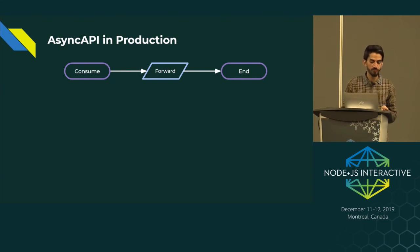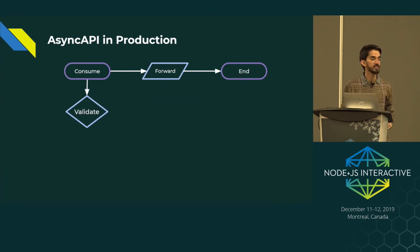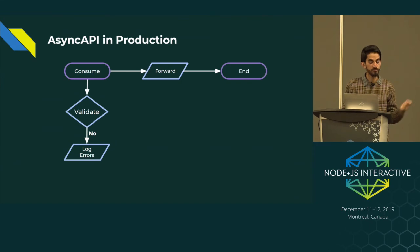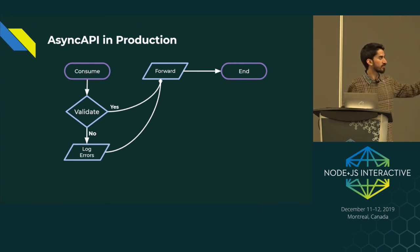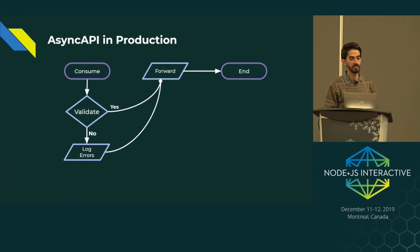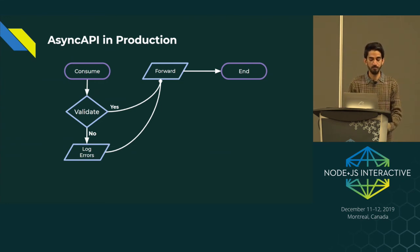The flow was like this: we consume the messages and forward them to the relative service. When we started consuming, we also started validating the messages. If the message schema is right, it passes. If it's not valid, we just log the errors but don't fail it or send an error back to the client — just log it to see in the logs if something was missing. If it's a valid message, forward it to the relative service. Even if there's an error and it's not a valid message, we still forward it to the service. This was the flow when we started using AsyncAPI to get it into the running production environment.